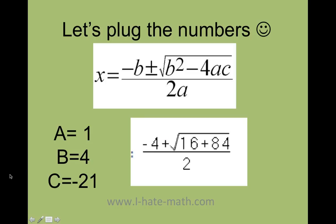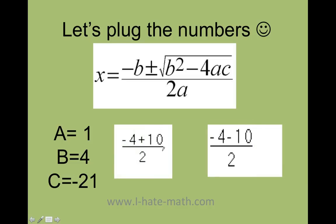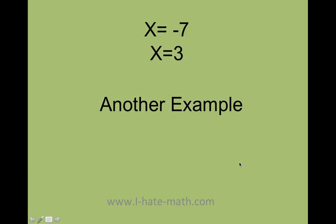Well, 16 plus 84 is going to be 100. And now I'm going to have negative 4 plus or minus the square root of 100. But 100 equals 10. So I have my first answer which is negative 4 plus 10 divided by 2 or negative 4 minus 10 divided by 2. And that's it.